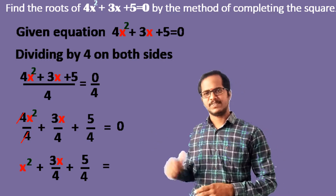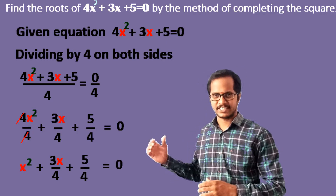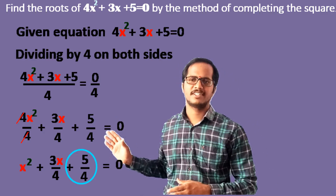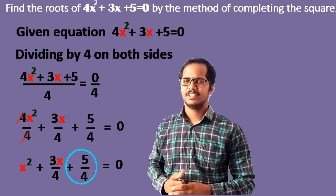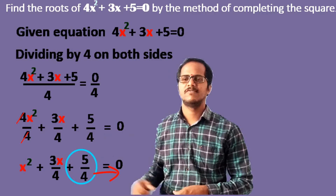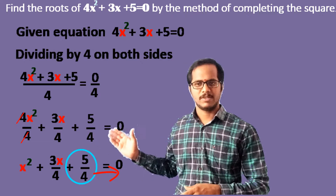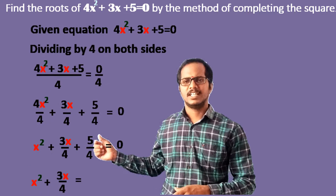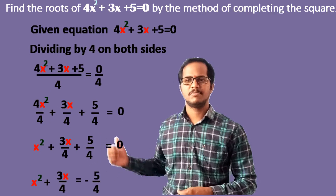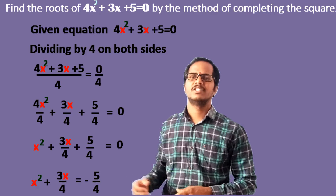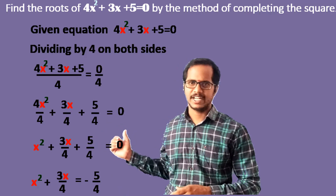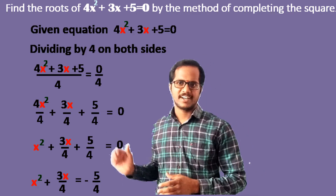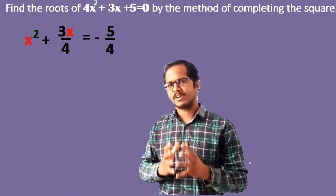Now we have the x² coefficient as one. Next, we have to transpose the constant term to the right-hand side. The constant term is 5/4, so transposing it gives us x² + (3/4)x = −5/4.